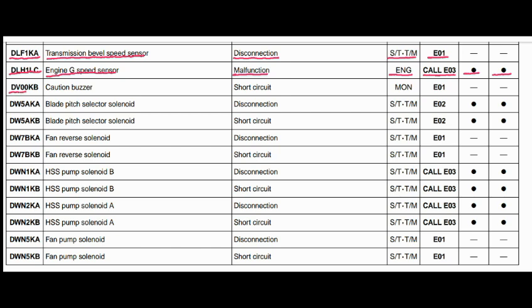Code DV00KB. The faulty part is the caution buzzer. The problem is a short circuit. The controller related to this fault is the monitoring panel, and the action code is E01.